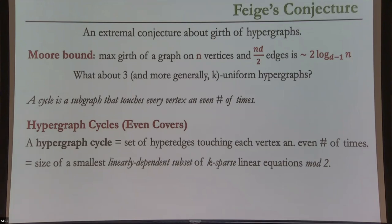I'm going to generalize this: a cycle in a hypergraph is simply a collection of hyperedges so that every vertex appears an even number of times. Think of graph edges as describing two-sparse linear equations over GF(2): if edge ij is present, think of the equation x_i + x_j = 0 or 1 mod 2. Then a cycle is a collection of linearly dependent equations — adding them up, since every vertex appears an even number of times, gives zero. The girth exactly corresponds to the length of the shortest linear dependence, which a coding theorist would recognize as the distance of the dual code.